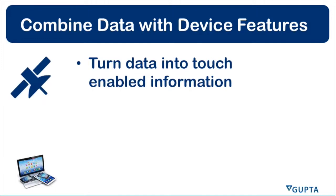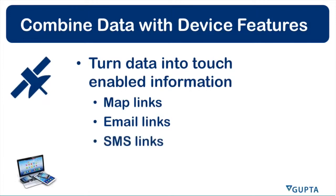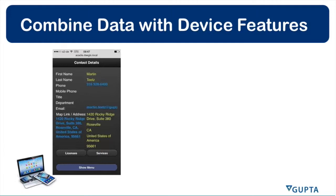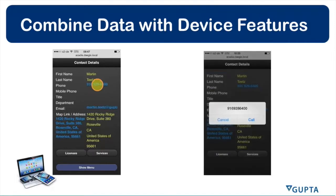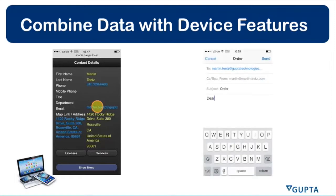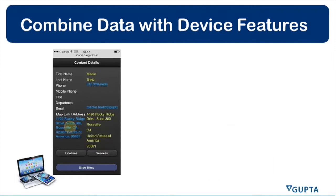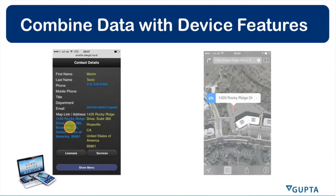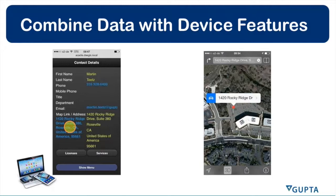With TD Mobile you can turn data into touch-enabled information. You can create map links, email links, SMS text message links, and phone links. For example, if an application screen has a phone number, you tap on that phone number and trigger the phone application of the mobile device to make a call right away. You can also tap on the email address to start writing an email, or tap on an address link to open the map application and navigate to that place, such as finding our office in Roseville, California.